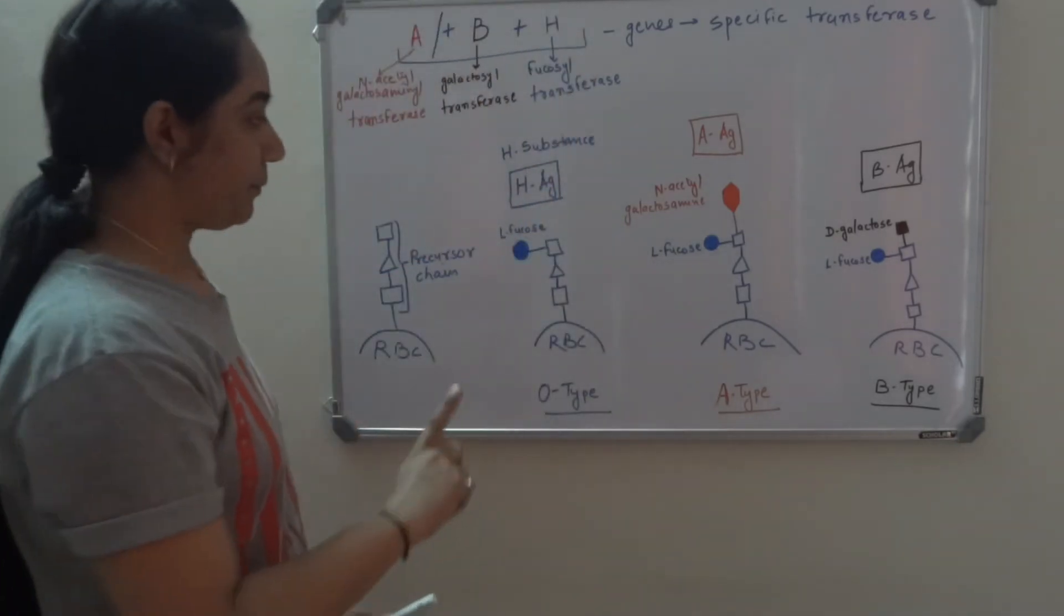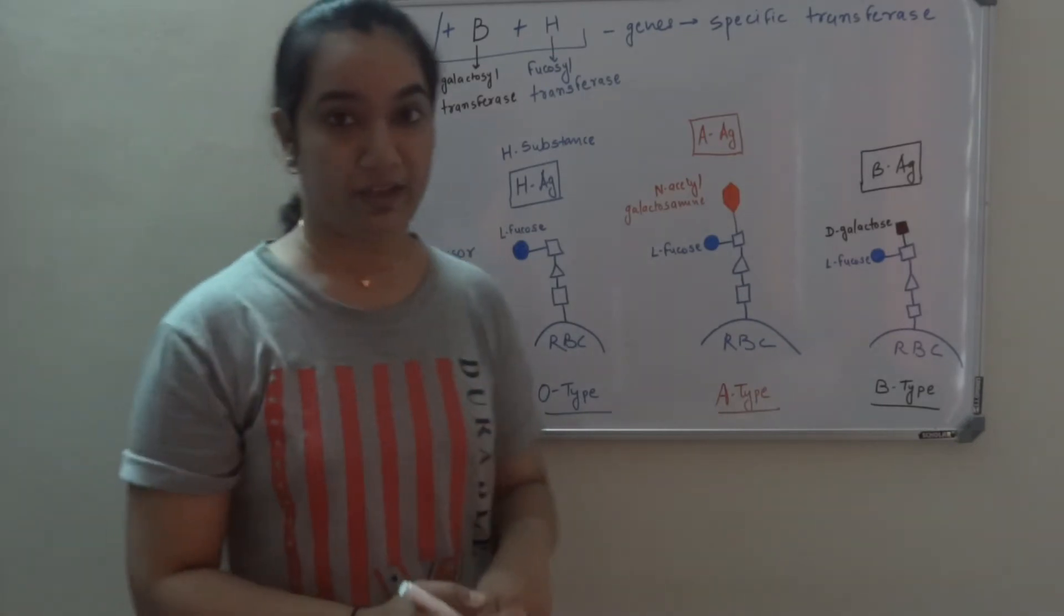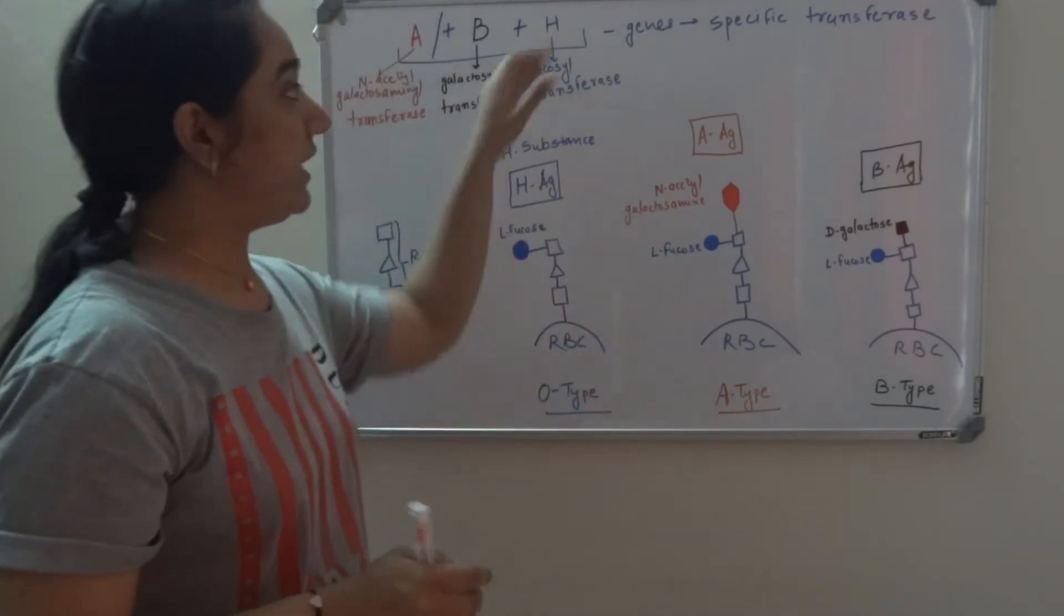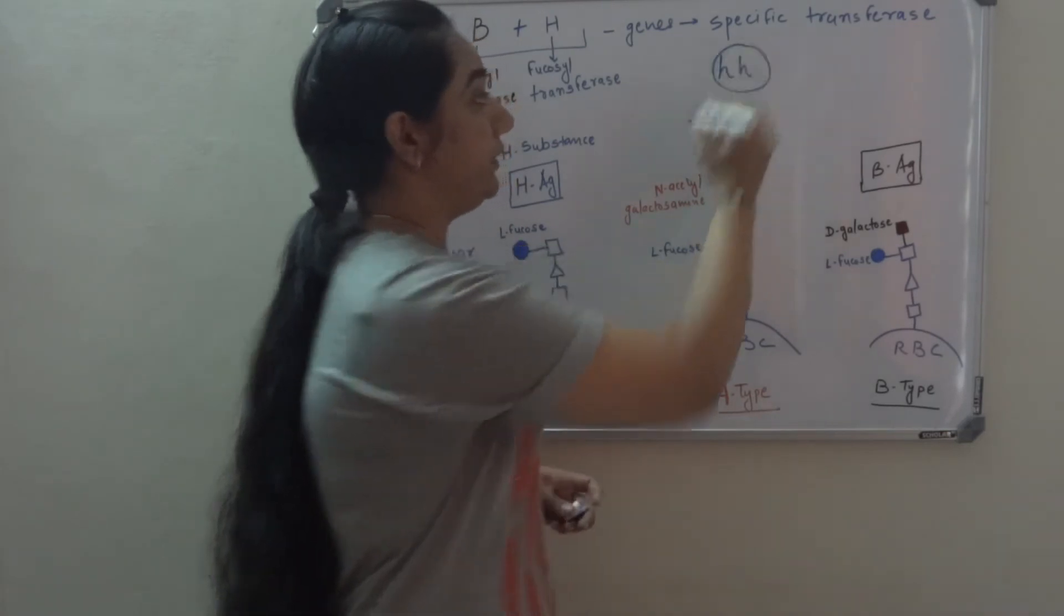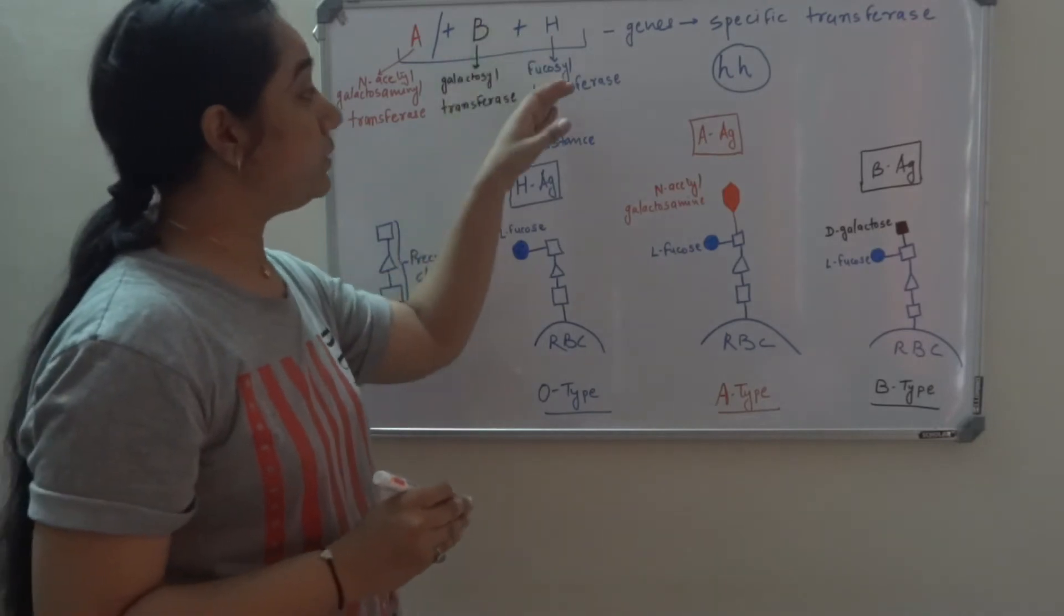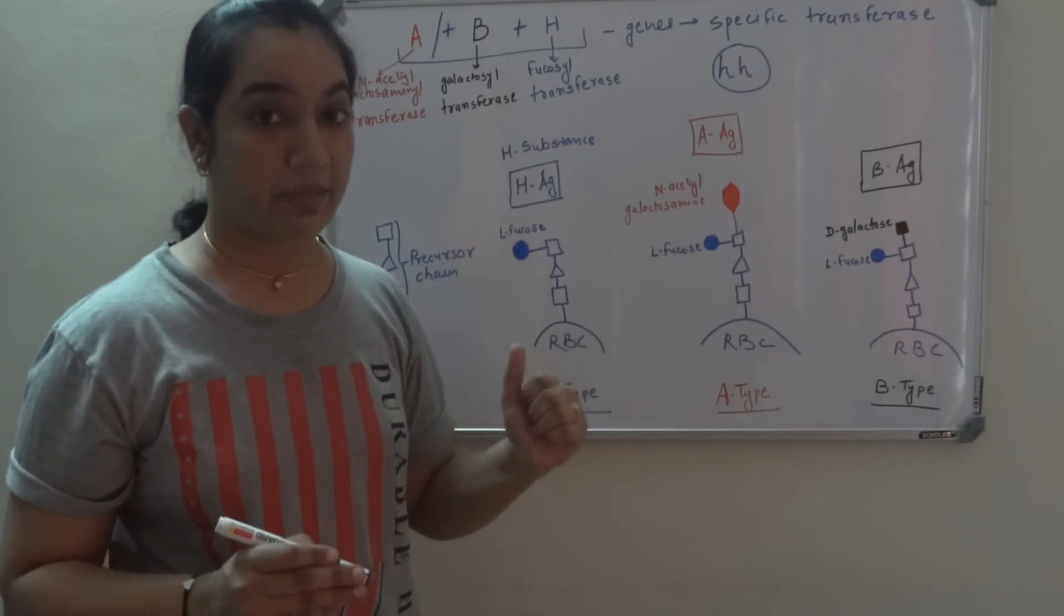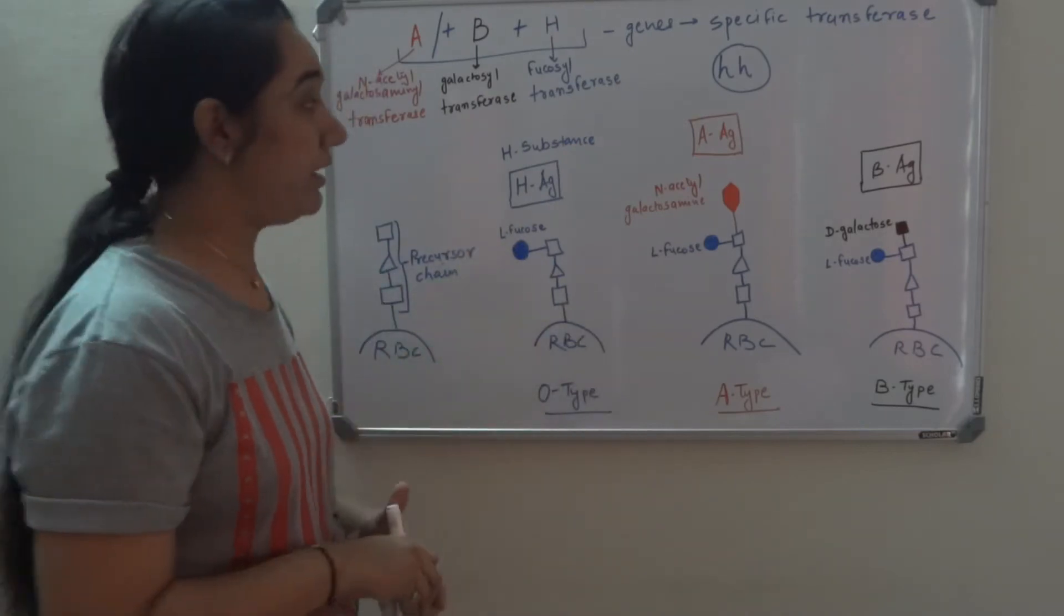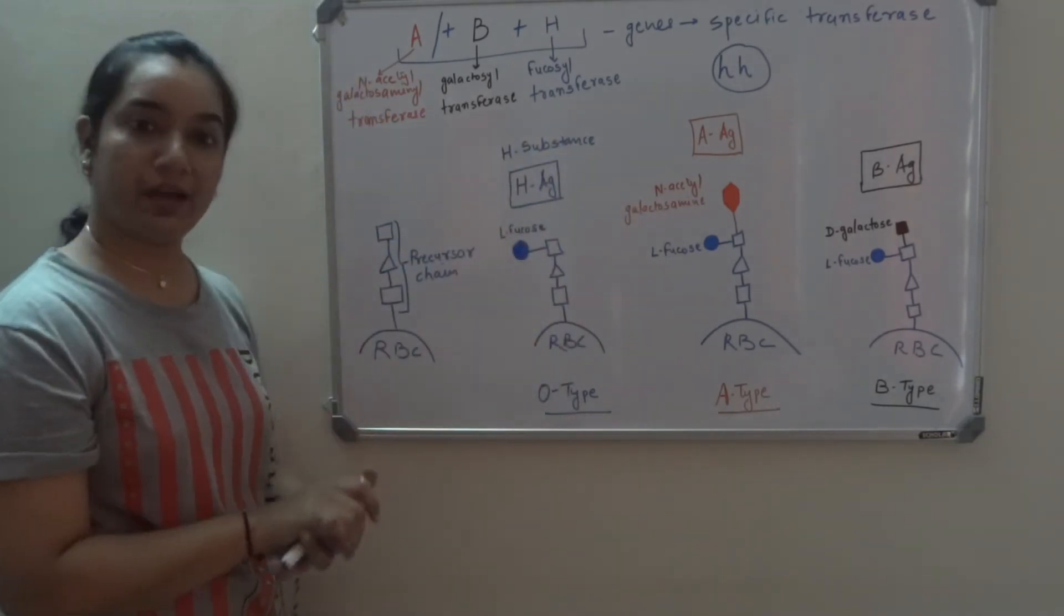Because this is a phenomenon where the individual has a very rare homozygous recessive condition for H gene. That means the gene, both the alleles are mutated. As a result, they cannot produce active or there is no fucosyl transferase enzyme. As a result, L-fucose is not added to precursor chain and there is no H substance produced. The precursor chain is as it is on the RBC.